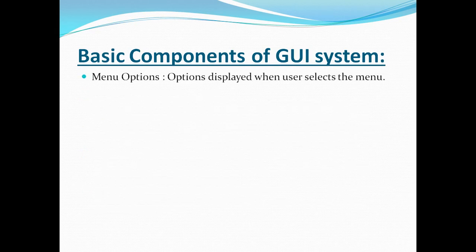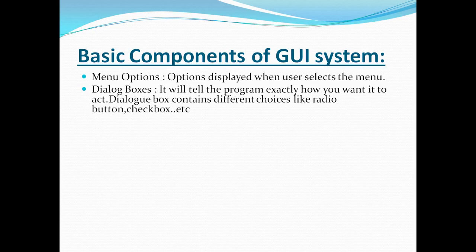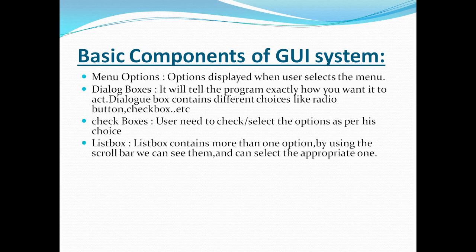Menu options are displayed when users select the menu. Dialogue boxes tell the program exactly how you want it to act. Dialogue boxes contain different choices like radio buttons, check boxes. Users need to check or select the options as per their choice.